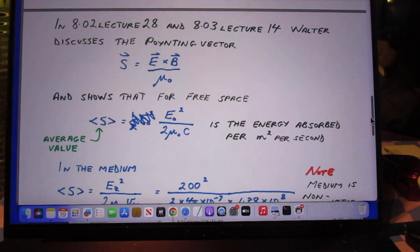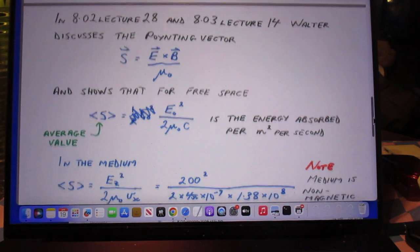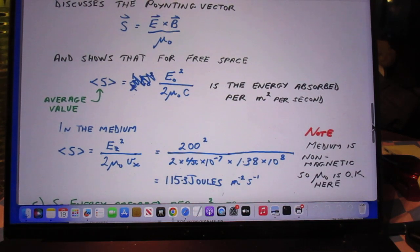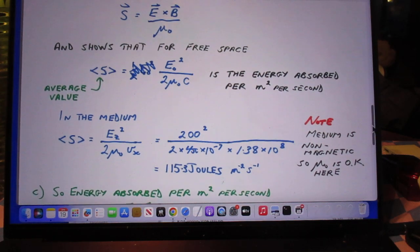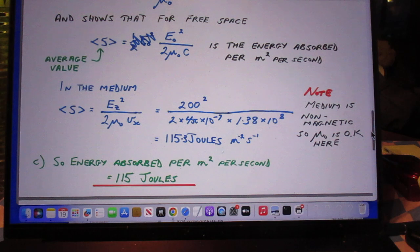In lecture 28 of 802 and 803 lecture 14, Walter discusses the Poynting vector, which is S. It is E cross B divided by mu zero, and he shows that for free space the magnitude of S is E zero squared divided by 2 mu zero C. This is the average value by the way of S.